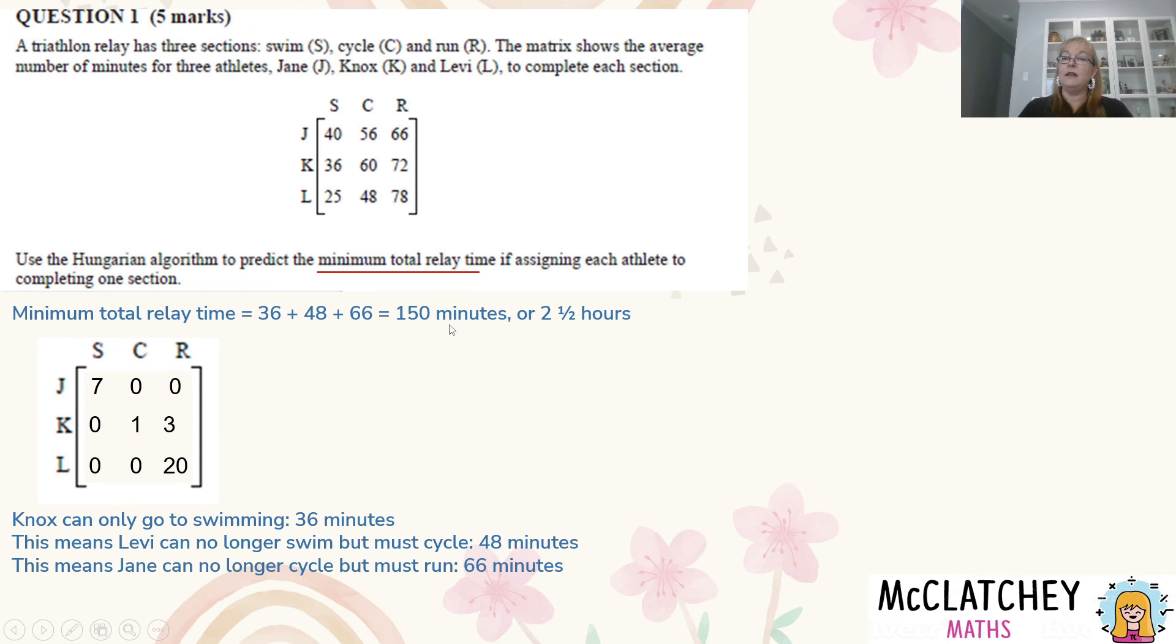Once I add those three together I'm going to get 150 minutes. Change that into hours - we know there's 60 minutes in an hour. Two hours makes 120 minutes and 30 minutes more makes two and a half hours. And I get my final mark there for predicting the minimum total relay time including hours and minutes. Okay so we've got to use those units.